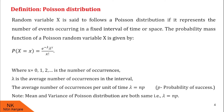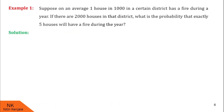Now we proceed to examples based on Poisson distribution. In this first example, we are given that on an average, one house in 1000 in a certain district has a fire during a year. If there are 2000 houses in that district, what is the probability that exactly 5 houses will have a fire during the year?